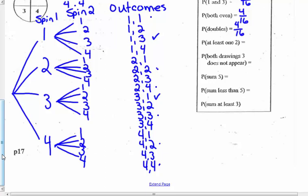The probability of at least one two: counting those outcomes gives seven out of 16. The probability that three does not appear: skipping all outcomes that contain a three, that gives nine out of 16 — the highest probability we've had so far. The probability of a sum of five: one-four, two-three, three-two, and four-one — four out of 16.